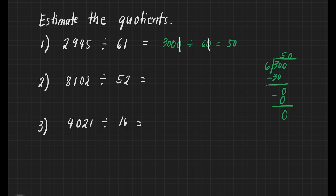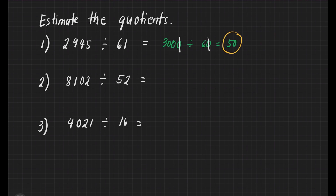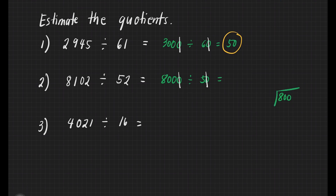That's our final answer. For number 2, round off 81,102 to its highest place value — this will give us 80,000. Divided by 52, which will become 50. Then we're ready to cancel some zeros: one zero from our dividend and one zero from our divisor. That will give us 800 divided by 5.